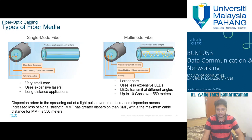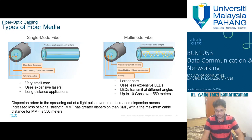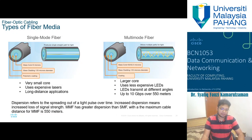There are two types of fiber: single-mode fiber and multi-mode fiber. Single-mode fiber has a very small core, uses expensive lasers, and is used for long-distance applications. Multi-mode fiber has a larger core, uses less expensive LEDs that transmit at different angles bouncing within the fiber, and can go up to 10 Gbps over 550 meters only. Dispersion — the spreading out of the light pulse over time — increases signal loss. Multi-mode fiber has greater dispersion than single-mode because the light bounces multiple times, limiting its cable distance to 550 meters before needing a booster.